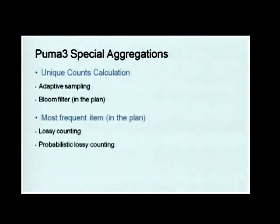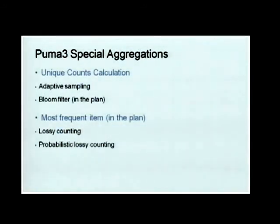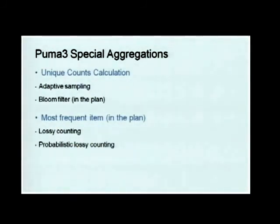For most frequent items, we have the classic lossy counting algorithm from the randomized algorithms literature. There's also a probabilistic lossy counting algorithm published last year or the year before, and we plan to use that. All these complex aggregations are approximate, because we want to save memory.